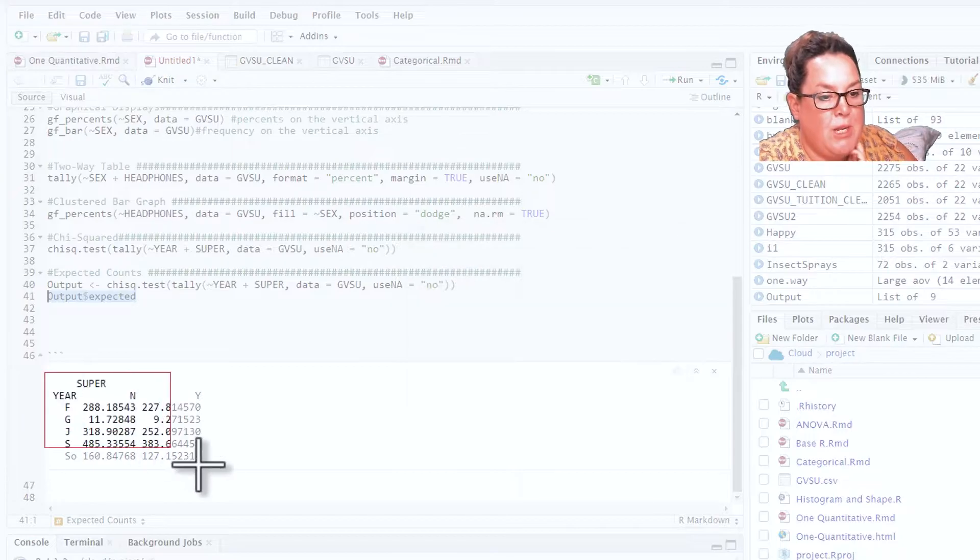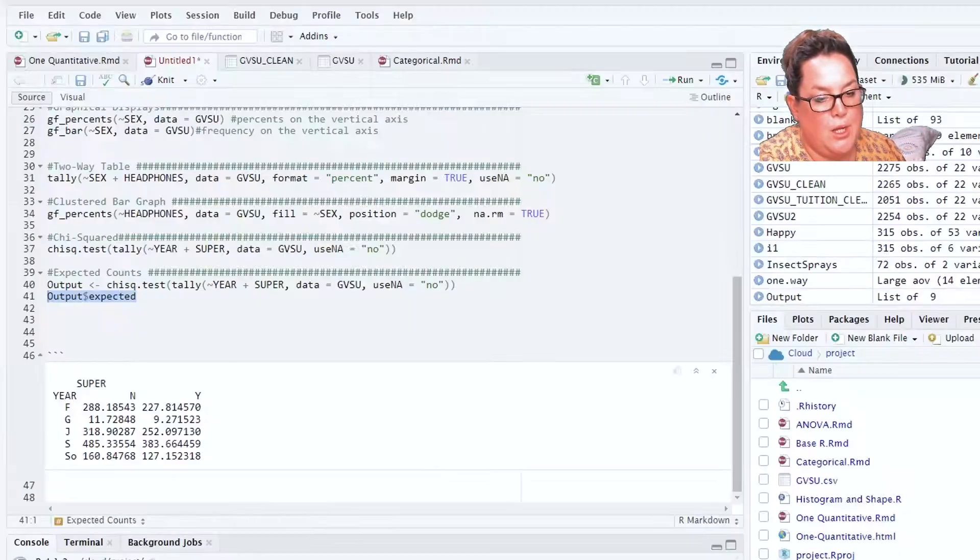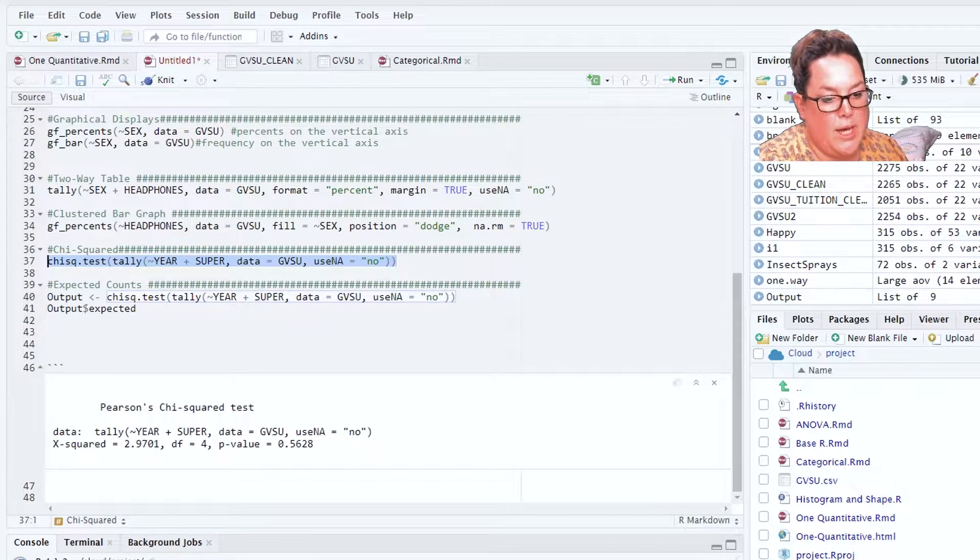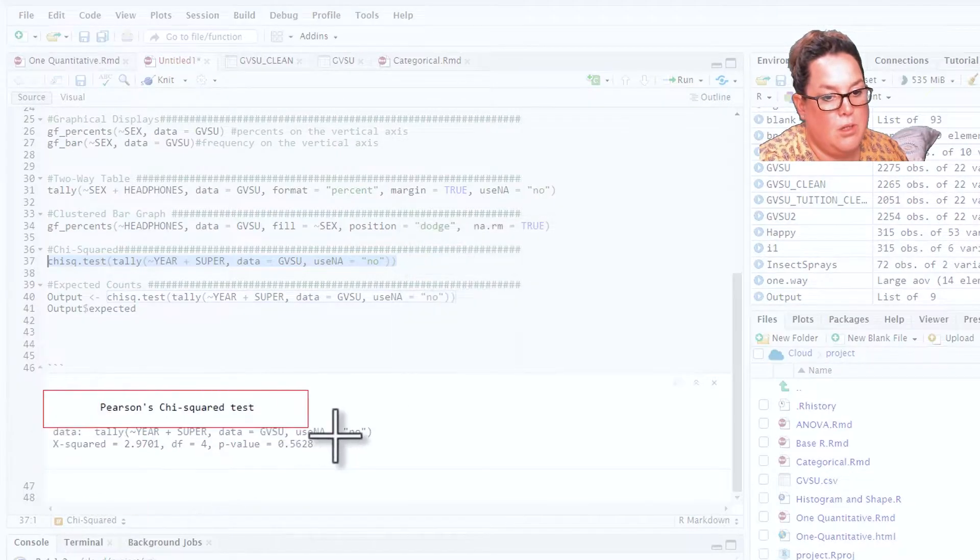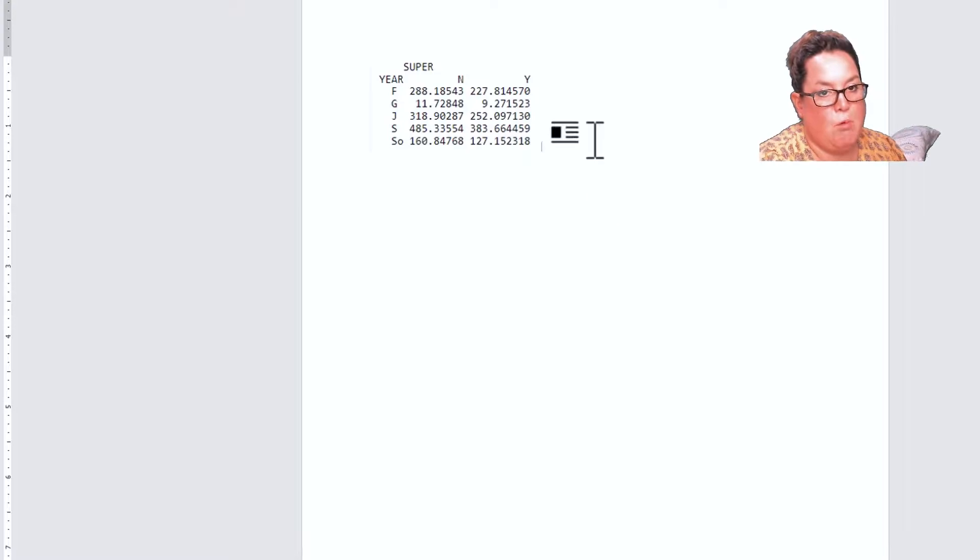I'm just really quickly going to snip those so that we can put them in a Word document and utilize those in a minute. Let's copy that and paste and then we'll rerun this line so we can get that output. New snip, copy into my Word document, paste.